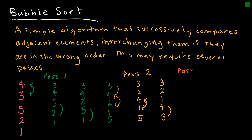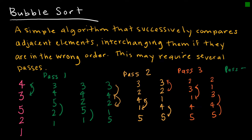Pass three: three and two are not in the right order, so now it's 2, 3. Then three and one are not in the right order, giving me 2, 1, 3. Three and four are fine, and four and five are fine. Pass four: two and one are not in the right order, so now it's 1, 2, then 2-3, 3-4, 4-5 are all correct. It took four passes using bubble sort — not necessarily efficient, but it is effective.